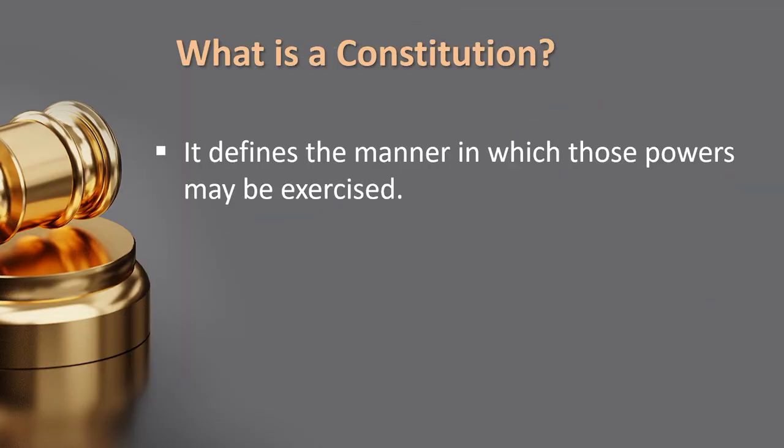The constitution defines the manner in which the machinery of government can exercise its powers and how it may exercise them — two distinct things. First is the possibility of doing something for which it has been empowered. Second is what it may do, which refers to discretionary power. Public bodies are given discretionary powers to perform the functions they have been given under the constitution.